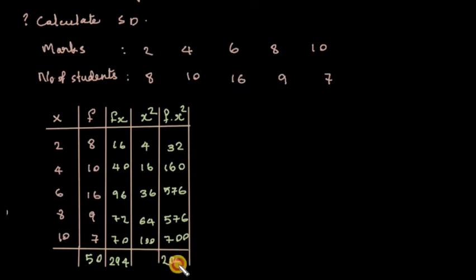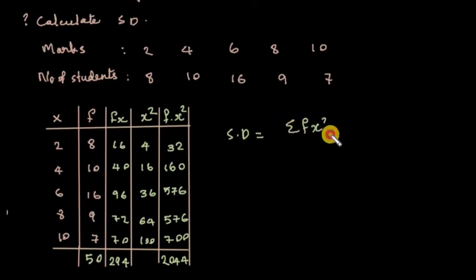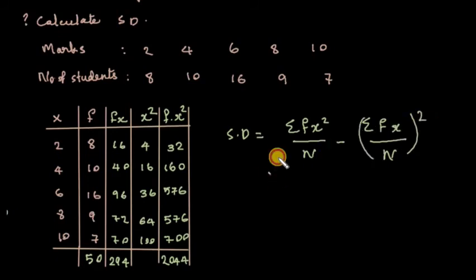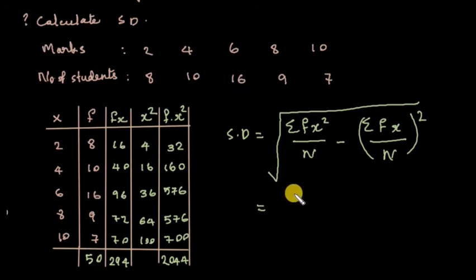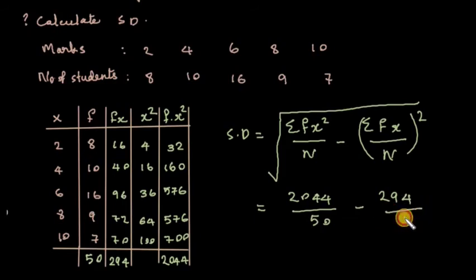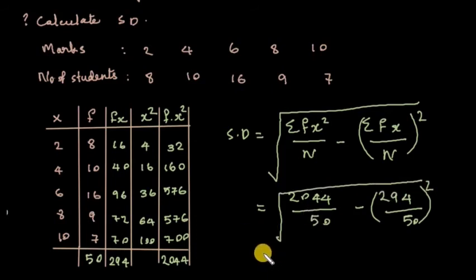N equals 50, sigma fx equals 294, and sigma fx² equals 2044. Applying the formula: square root of (2044 divided by 50) minus (294 divided by 50) all squared, which equals 2.51.